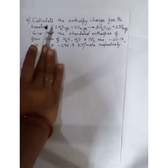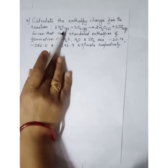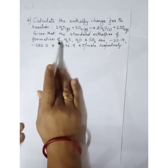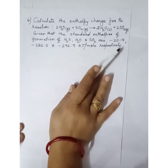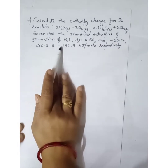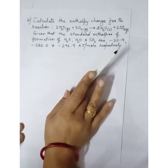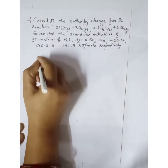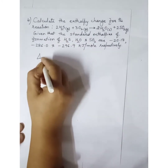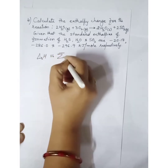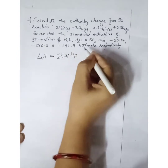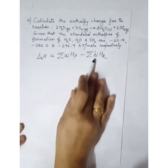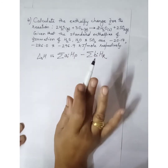Fourth numerical: Calculate the enthalpy change for the reaction 2H2S (gas) plus 3O2 (gas) gives 2H2O (liquid) plus 2SO2 (gas). Given standard enthalpies of formation: H2S is minus 20.17, H2O is minus 286.0, and SO2 is minus 296.9 kilojoule per mole. The formula for reaction enthalpy is: delta_R H equals sigma of (stoichiometric coefficient times enthalpy of formation of products) minus sigma of (stoichiometric coefficient times enthalpy of formation of reactants).